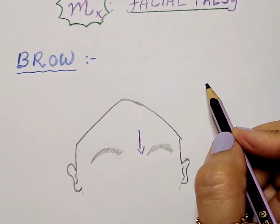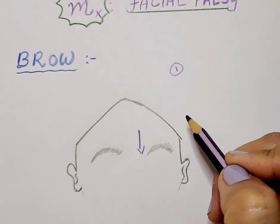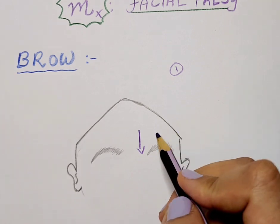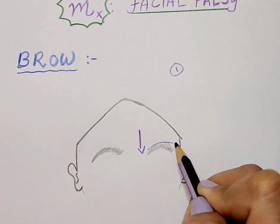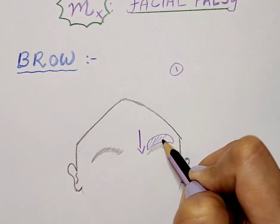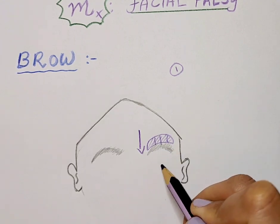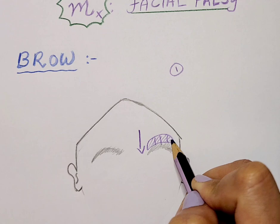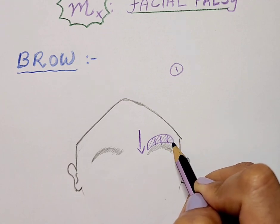In the aged or elderly population where there is a lot of skin laxity, a static procedure of direct brow excision can be done. A chunk of skin as well as frontalis muscle just above the region of the eyebrow is excised and sutured back together to lift the brow on the affected side. Not only skin but a portion of the frontalis muscle is excised, the muscle is plicated, and then the skin is approximated. That is direct brow excision.